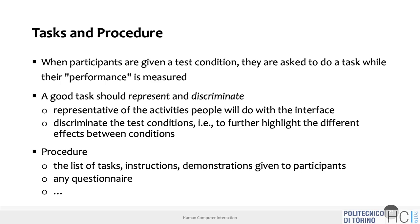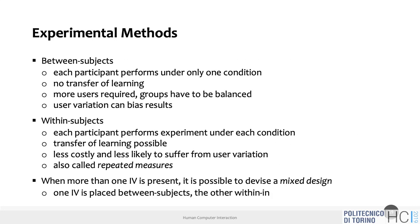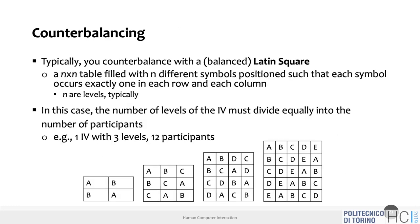So in a controlled experiment you write a null hypothesis and an alternative hypothesis with respect to the independent and dependent variables, then decide between-subject or within-subject, write a table of conditions, and decide on task sequence. The first participant does, say, three-item textual then three-item textual-plus-icon; or in the alternative table arrangement, three-item textual then five-item textual — different task ordering and meaning.